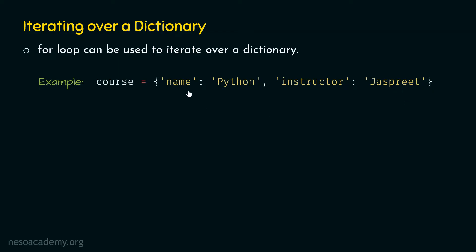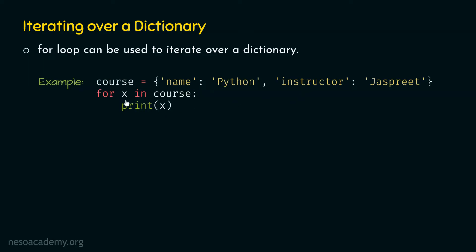Now, let's say that the requirement is to print these keys on the screen. For this purpose, we can use this for statement: for x in course. This statement allows us to access each key of this dictionary. These keys are assigned to this variable x one at a time. Within this for loop, we can use print x to print each key of this dictionary on the screen.